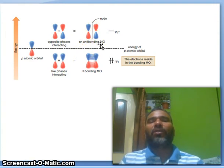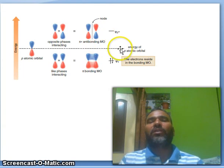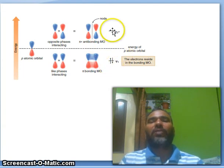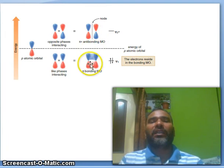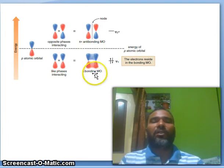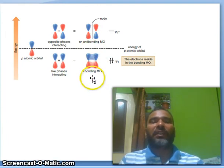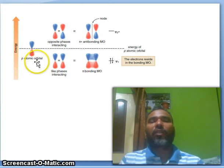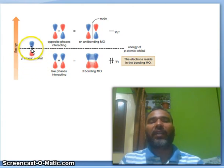So this one is psi 1 and psi 2. Psi 2 has a node, but psi 1 has no node. Consider the p orbitals with their red and blue phase designations.